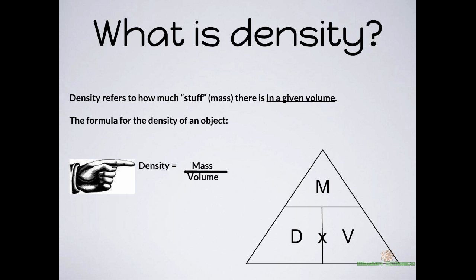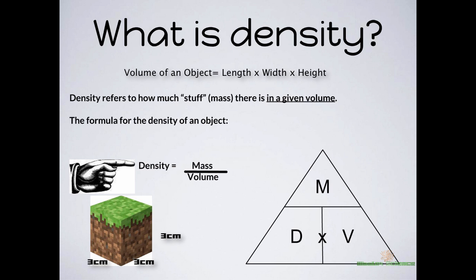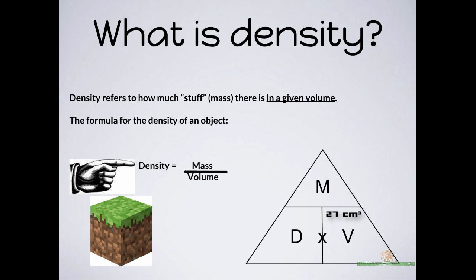Let's say you have a cube, and on each side it is 3 centimeters. How do you figure out the volume of a cube? Very simple — you just multiply all three sides: length, width, height. So 3 times 3 is 9, and 9 times 3 is 27. So the volume of your block is 27 centimeters cubed.